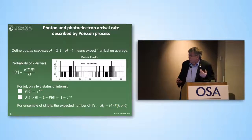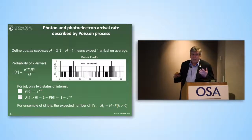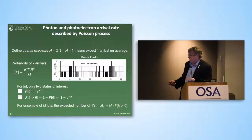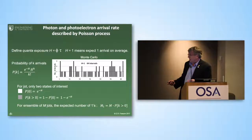Photons arrive with shot noise on arrival. For our devices we only care about two things: one — there's no photon; and two — there is a photon, and the probability of that is 1 minus e to the minus h, which is what we were just looking at.